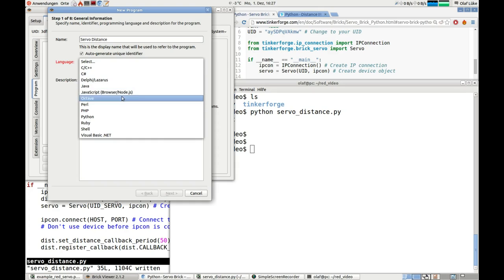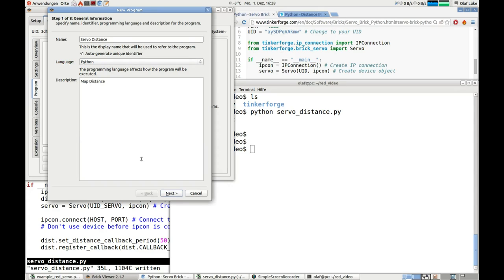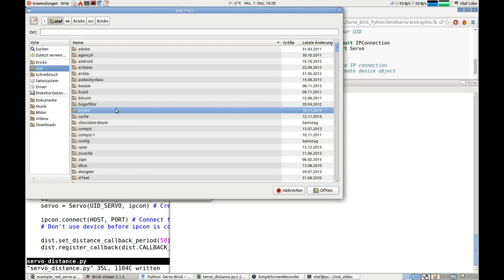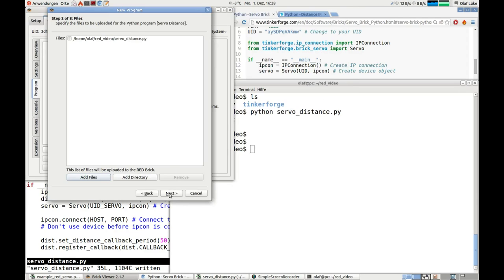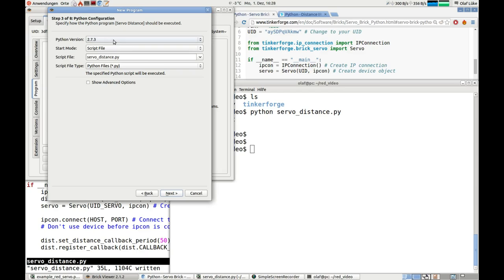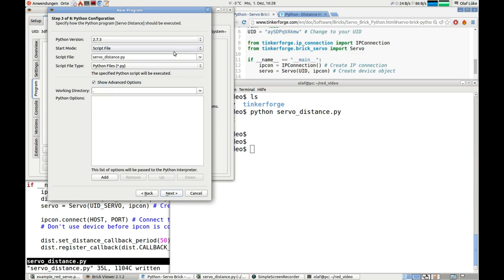We choose a program name, Python as programming language, and enter a short description. Then we select our Python script for upload and choose appropriate settings for the interpreter, program arguments, environment variables, standard in and output, and the scheduling of the program.